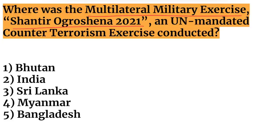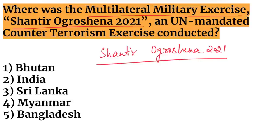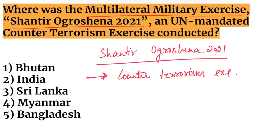Next question: where was the multilateral military exercise Shantir Ogrosena 2021, a UN-mandated counter-terrorism exercise, conducted? Shantir Ogrosena 2021 is a UN-mandated counter-terrorism exercise and it was held in Bangladesh.